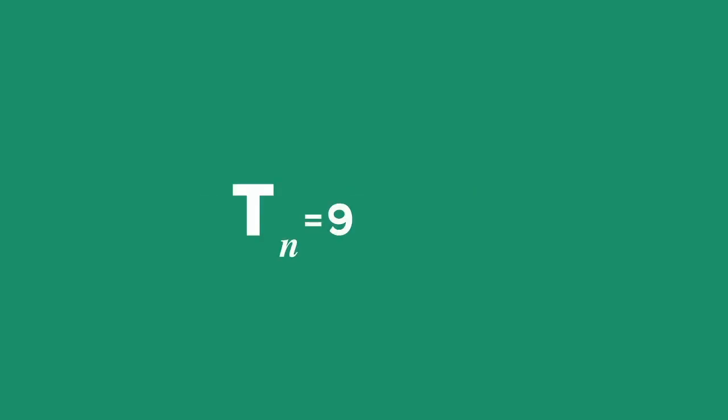Hence, the nth term, or general term, of the sequence is Tn equals 9 times 2 thirds to the power of n minus 1.